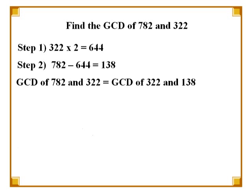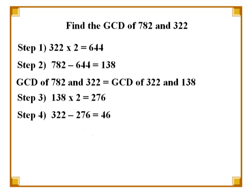As seen in the first example, we choose the lower number 322 and find the GCD of 322 and 138. This can be obtained by multiplying 138 by a number to get as close as possible to 322. 2 times 138 gives us 276, which is as close as we can get to 322. Next, we subtract 276 from 322, which gives us 46.